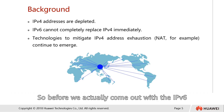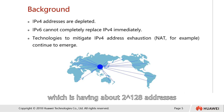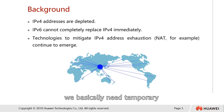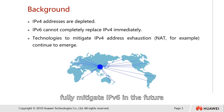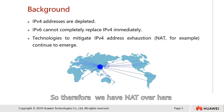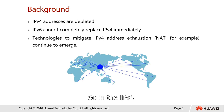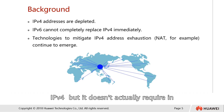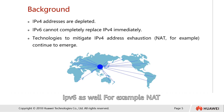Before we came up with IPv6, which has about 2 to the power of 128 addresses — or roughly 340 decillion IPv6 addresses — we needed a temporary solution to fully migrate to IPv6 in the future. Therefore, we have NAT. In IPv4, there are several technologies designed only for IPv4 that are not required in IPv6, such as NAT and IPsec VPN.